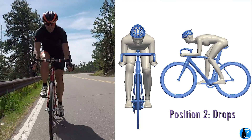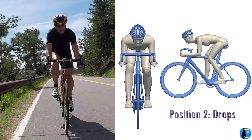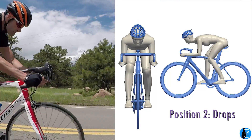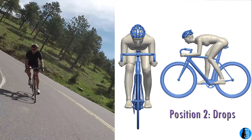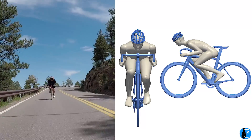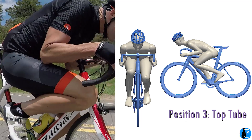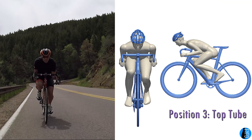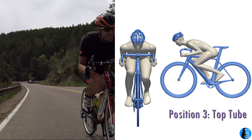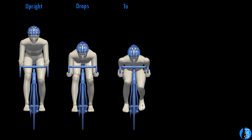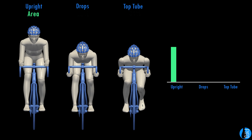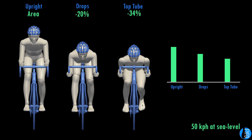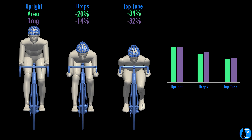The second position puts the rider's hands lower on the handlebars, in what cyclists call the drops. This leans the rider farther forward and gives them excellent control on the bike — it's a typical racing position both on flat terrain and when descending. The last position has our rider crouched on the bike's top tube; the rider is even lower, but it's extremely tough to pedal from this position, so it's only used when coasting downhill. The three positions vary a lot in frontal area: the drops and top tube positions are 20% and 34% smaller than the upright position's area, but the simulations — all run at 50 kmph at sea level — show the drag in the second and third positions are 14% and 32% lower, respectively.